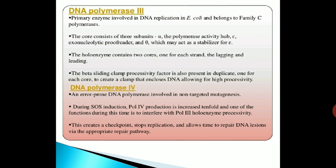DNA polymerase 4 is an error-prone DNA polymerase involved in non-targeted mutagenesis. During SOS induction, Pol 4 production is increased tenfold, and one of its functions is to increase Pol 3 holoenzyme processivity. This creates a checkpoint that stops replication and allows time to repair DNA lesions via the appropriate repair pathway.